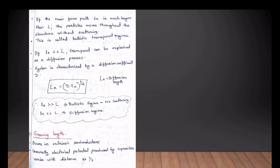We define the mean free path. If you have a collision on the ground, you can observe the mean free path. The mean free path is the ballistic transport regime.